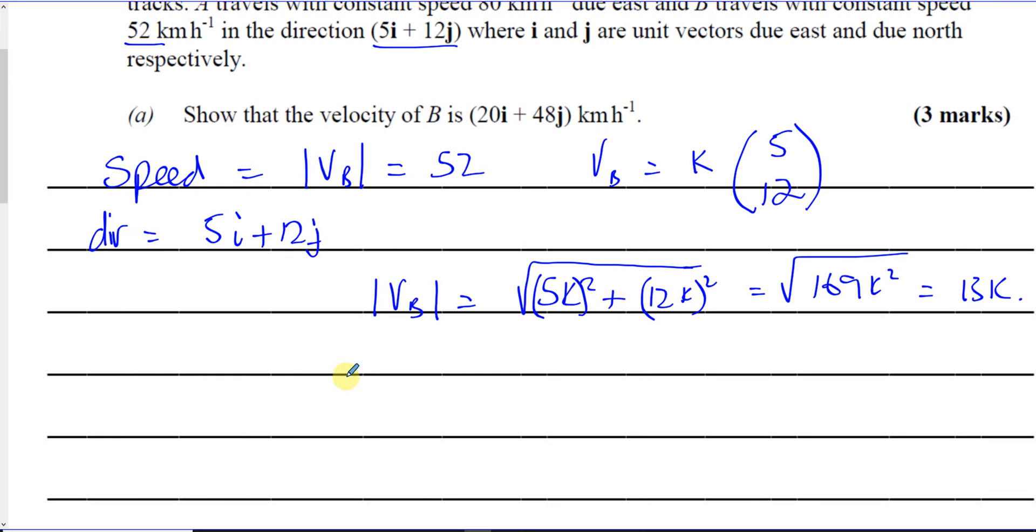So what we can say here is we know that 13k is equal to the magnitude of B, which is 52. So therefore, we can say k is equal to 52 over 13, which is 4. So I know that the velocity of B is 4 times the vector (5, 12). That's a vector with the right magnitude but also going in the right direction. So if you write this in i and j notation, it'll be 20i plus 48j, and that's exactly what we had to show as mentioned here. That's how we can show that.